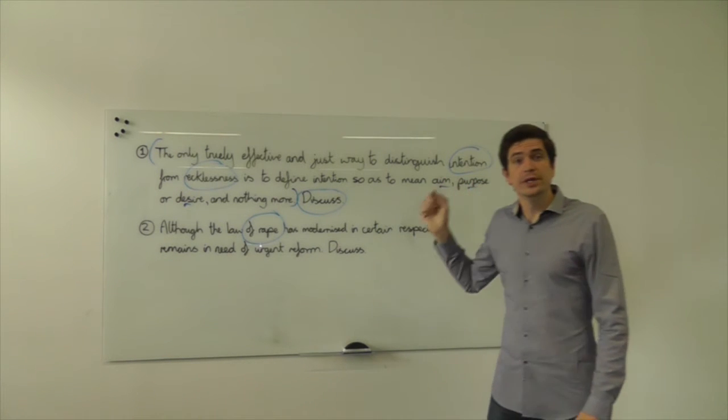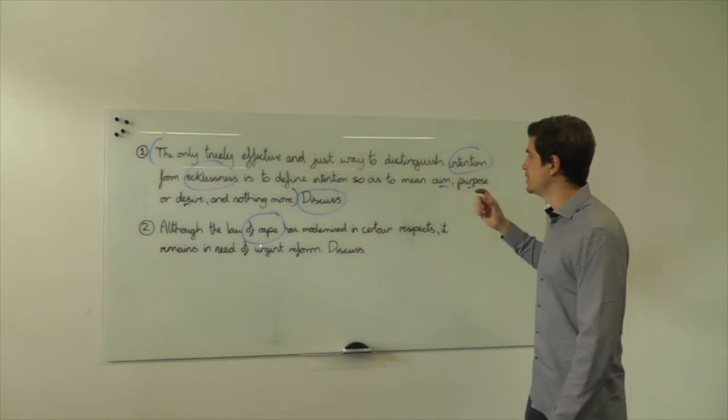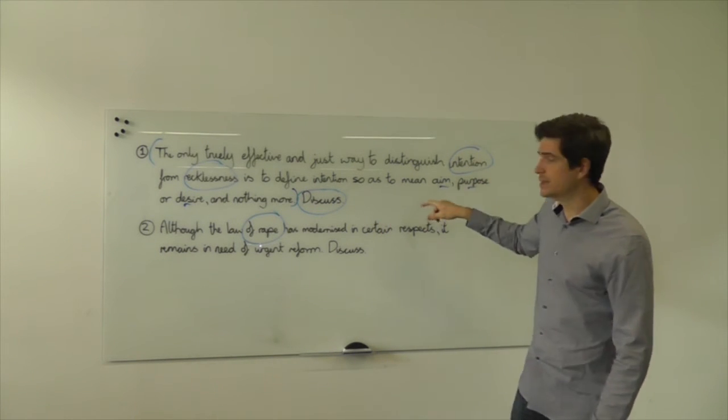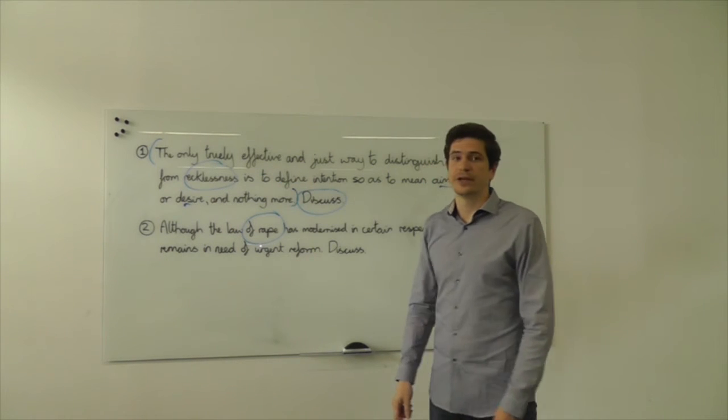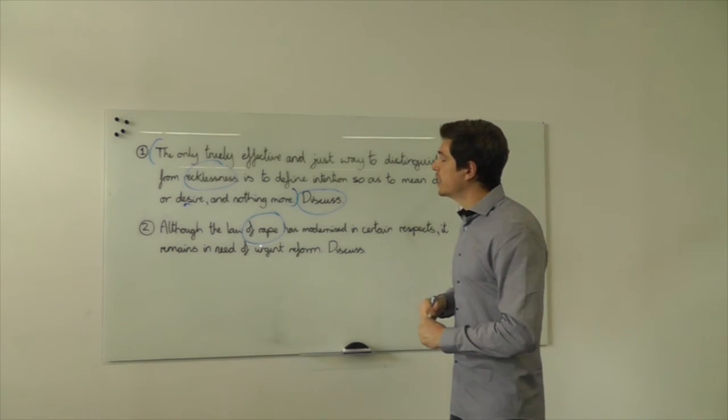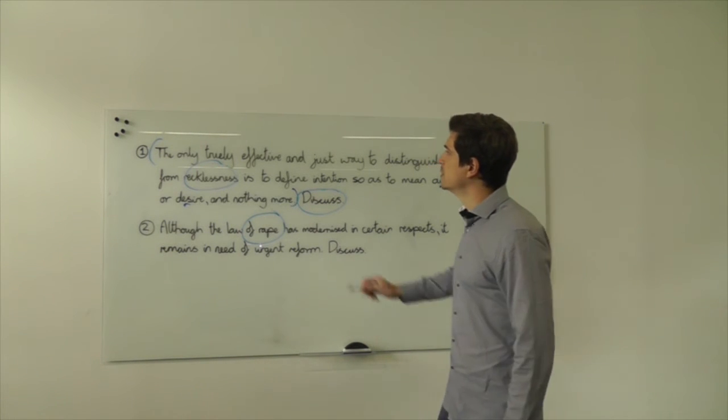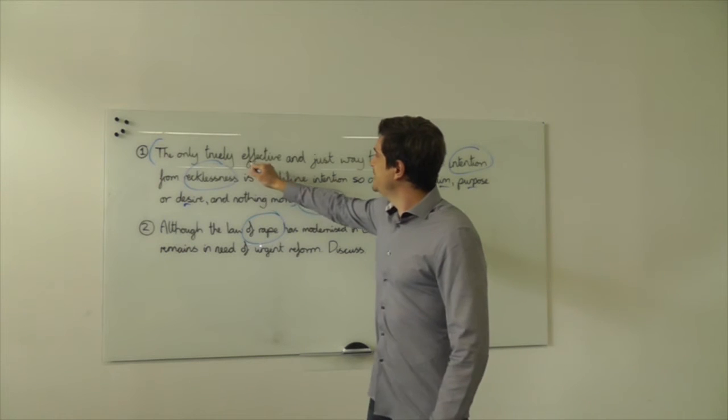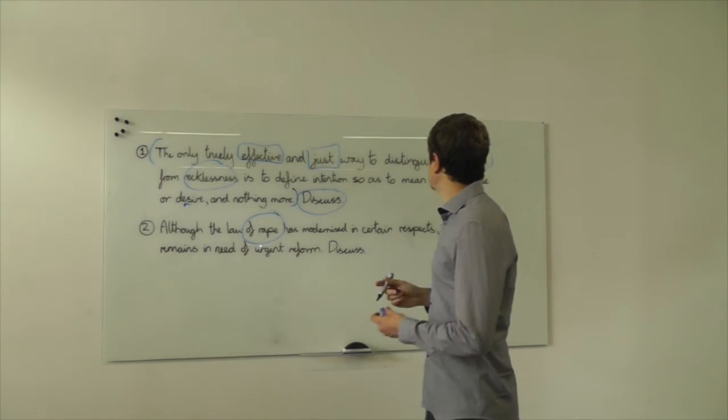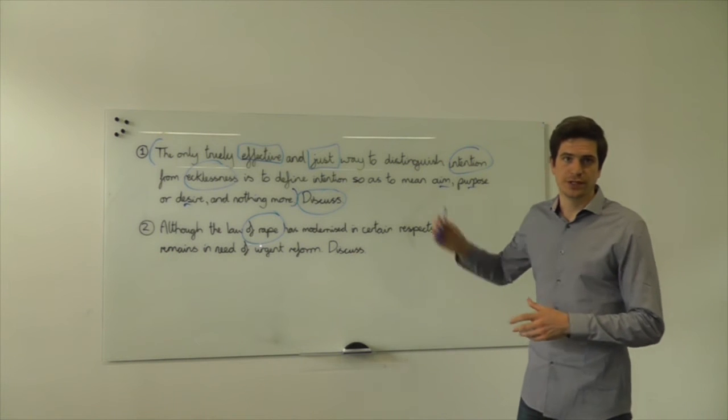So essentially that's our debate. The debate here is why do we need oblique intention? Wouldn't it be simpler simply to separate intention defined as direct intention from recklessness covering everything else? So we have that debate and now we need to understand the terms of that debate and again for that we look back to the question.